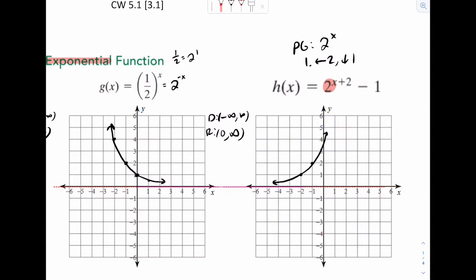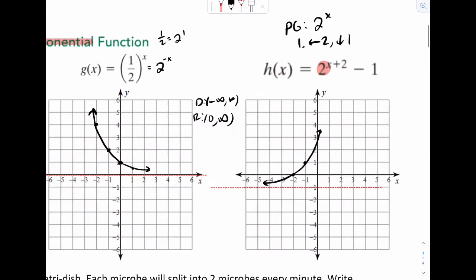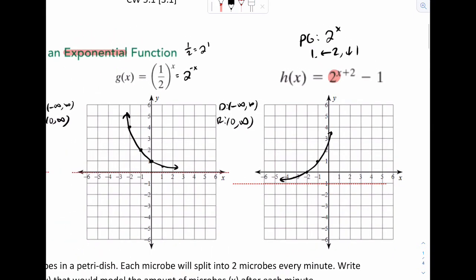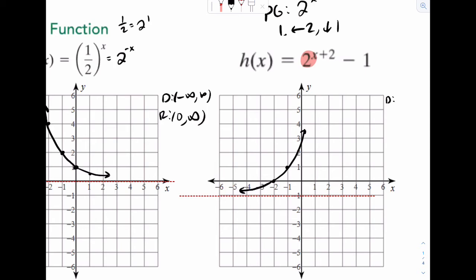So 1, 2, 1. And there's the new graph. So I'll do domain range. You should be noticing domain is always everything, and the range is simply from the asymptote and above. So in this case, it would be negative 1 to infinity.